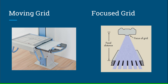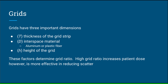This image shows a moving grid that is in common use today, originally developed in 1920 by Hollis E. Potter. The second image demonstrates the focused grid, where the grid strips are parallel to the primary x-ray path across the entire image receptor. A grid has three important dimensions: the thickness of the grid strip, the width of the interspace material, and the height of the grid — this is known as grid ratio. High grid ratios are more effective in reducing scatter radiation than low grid ratios, due to the smaller angle of deviation. However, high ratio grids increase the patient radiation dose. Generally, an 8:1 to 10:1 grid is used.